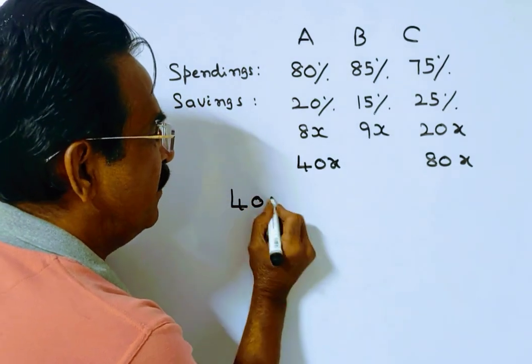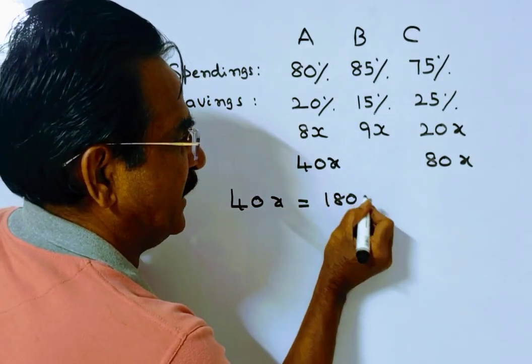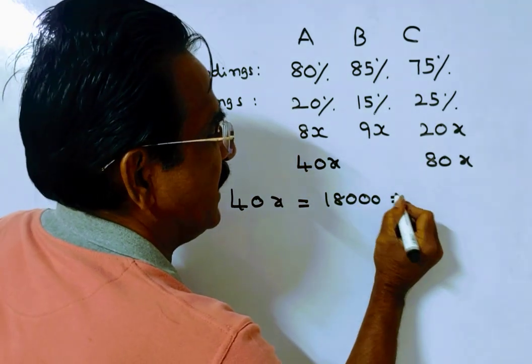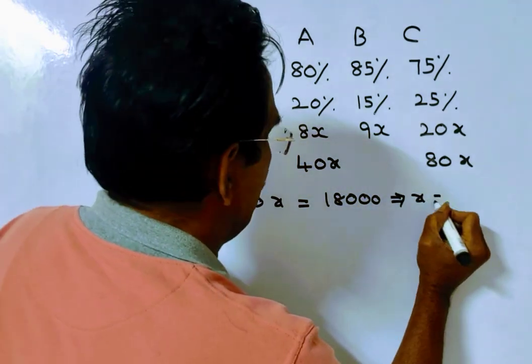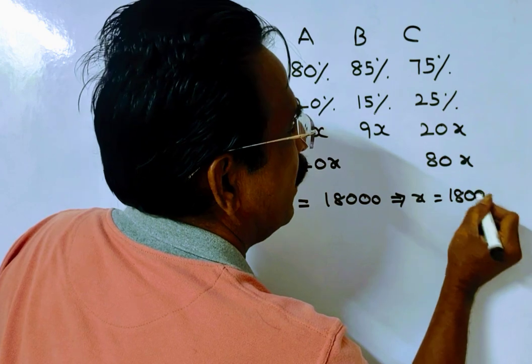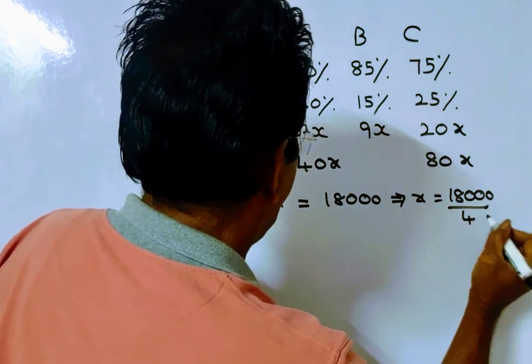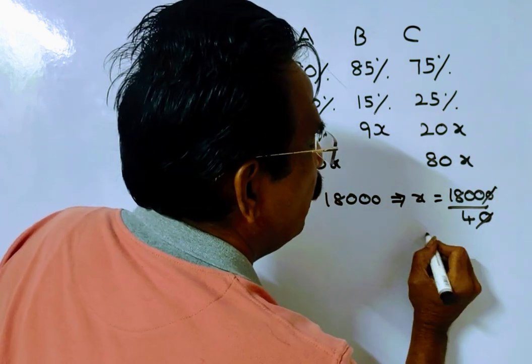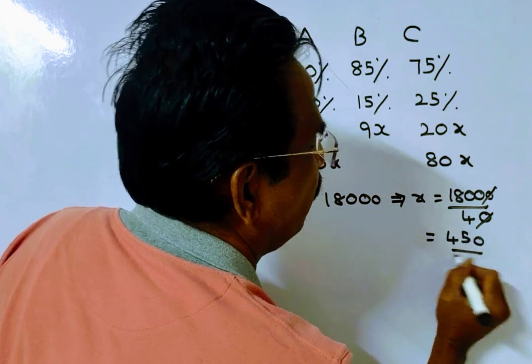So 40x is equal to 18,000. 18,000 implies x is equal to 18,000 upon 40, so 450. So 450 rupees, friends. X is equal to 450.